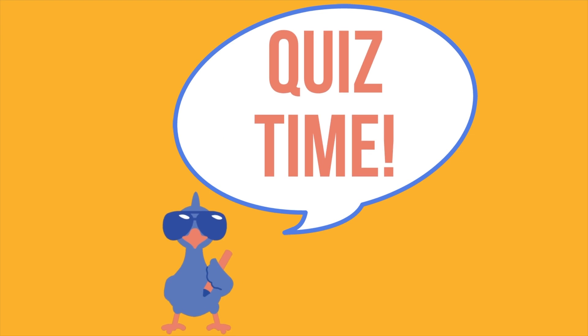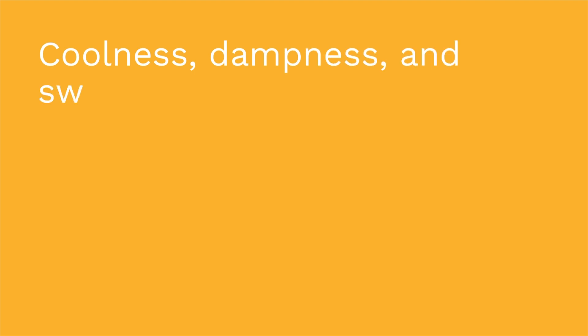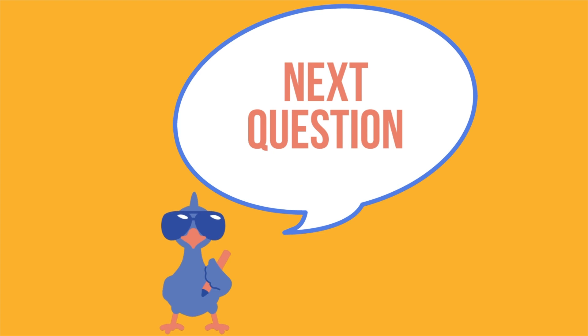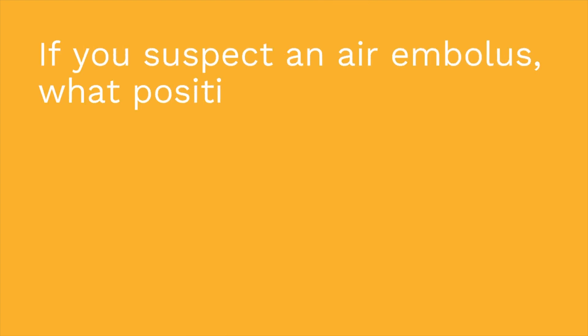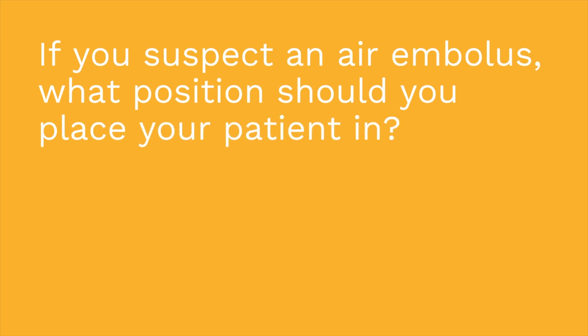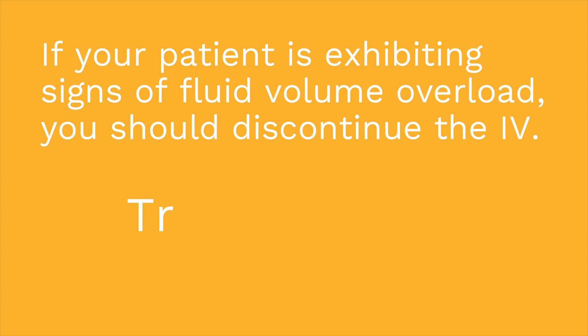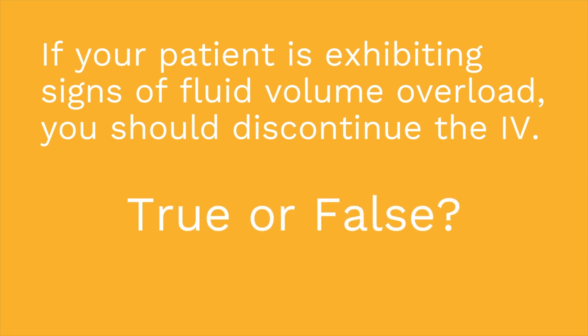Okay, are you ready for your quiz? I have three questions for you. First question: coolness, dampness, and swelling are signs of what IV complication? If you said infiltration, you are correct. Second question: if you suspect an air embolism, what position should you place your patient in? The answer is Trendelenburg. Third question: if your patient is exhibiting signs of fluid volume overload, you should discontinue the IV — true or false? False. Most times this is not necessary; we just need to slow the infusion rate of the IV fluids.